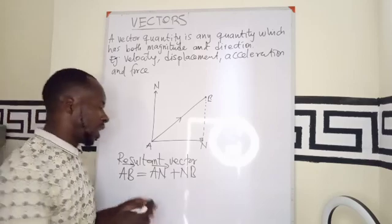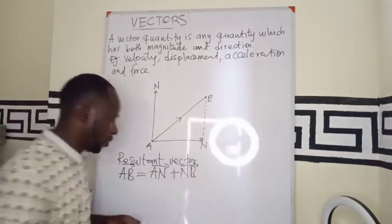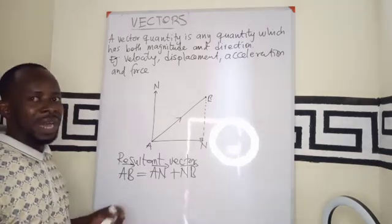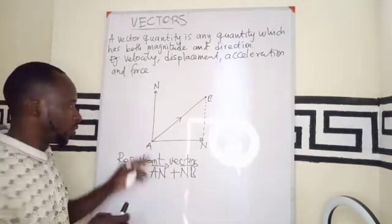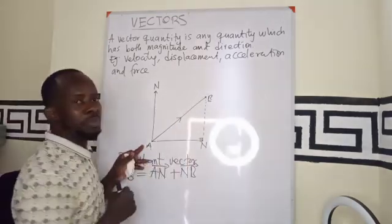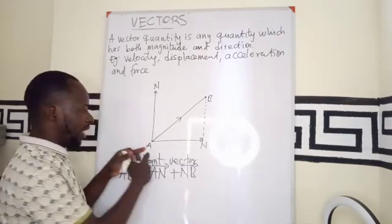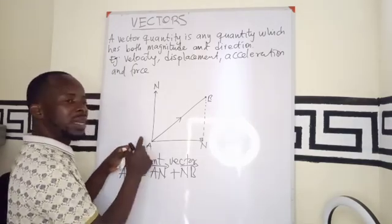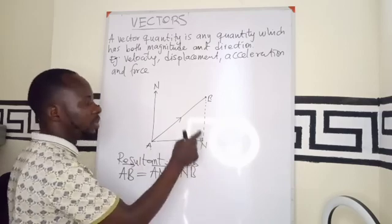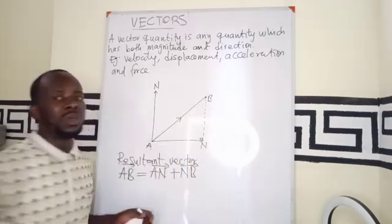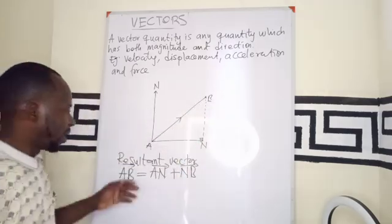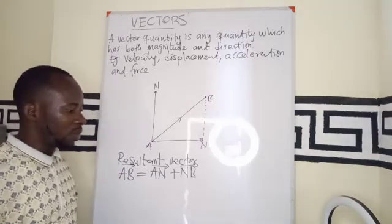This is what we call a resultant vector. We can be given values of this, that is the magnitude. The magnitude will be the measurement from here to B. The magnitude of AN has to be measurement from A to N. Then the magnitude from AN to B will be exactly the resultant vectors that you have.